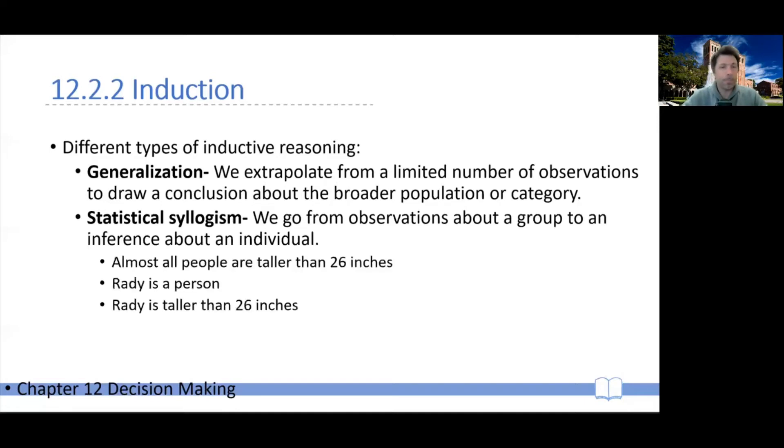Let me give you an example. Almost all people are taller than 26 inches. And notice the keyword almost, right? We're making a generalization in that premise. So almost all people are taller than 26 inches. Rady is a person. Stands to reason that Rady is taller than 26 inches. It doesn't have to be. It's not deductive. But you know, it's likely.